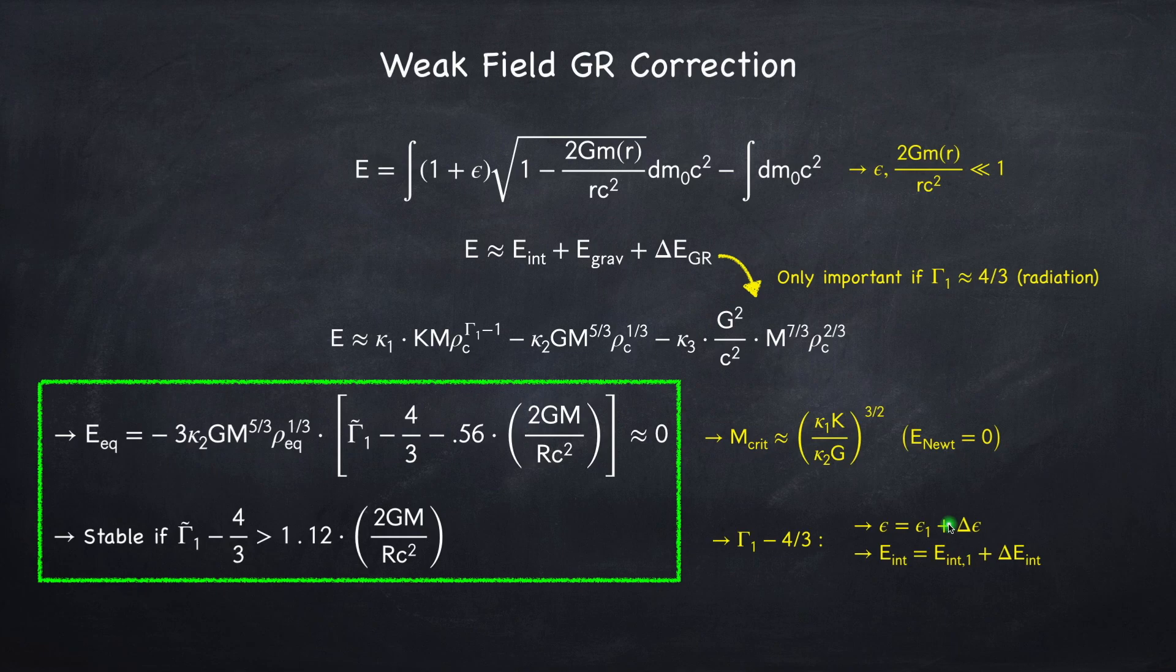This would then correspond to a total internal energy as being the Newtonian internal energy with gamma 1 equals 4 thirds, plus a correction term. And again, what these terms are will depend on the exact equation of state of the star.